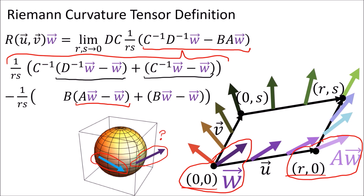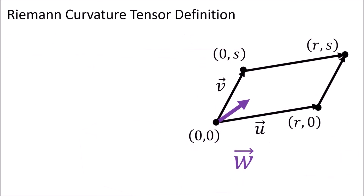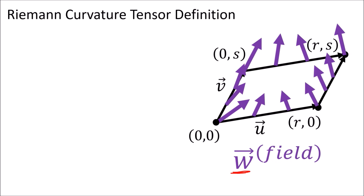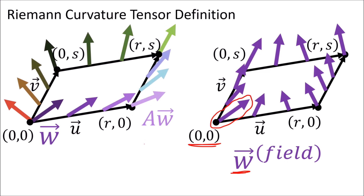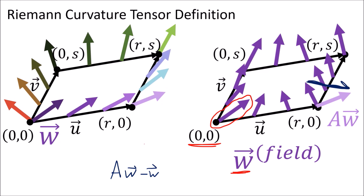To fix this, we extend the w vector into a full vector field around the parallelogram. The vector field can be any vector field we want, as long as it agrees with the original w at the origin and changes smoothly from point to point. The exact details of how we create this vector field don't actually matter — the final result of our formula won't depend on the vector field at all. What's important is that we can now compare the parallel transported vectors with the vectors in the w vector field at the same point, making the subtraction aw minus w meaningful when w is treated as a vector field.